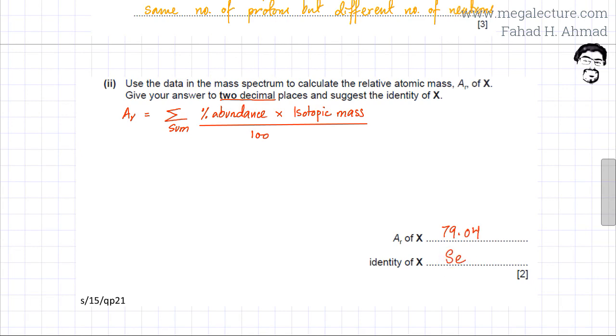That's the closest element having a relative atomic mass which is close enough. It's 79.0 in the periodic table. But 79.04 is the closest. So selenium is the answer. That should be the identity of this element X.